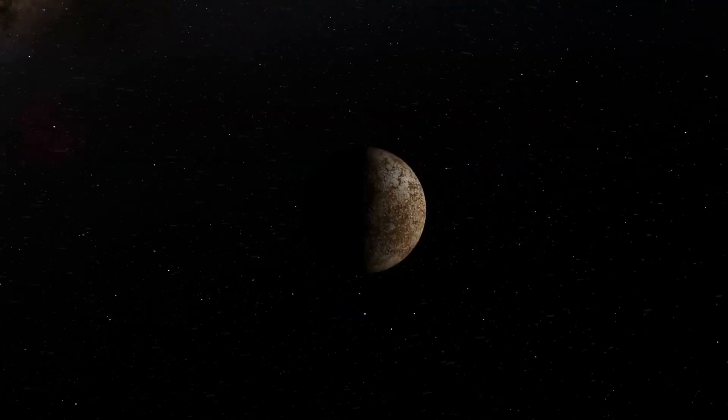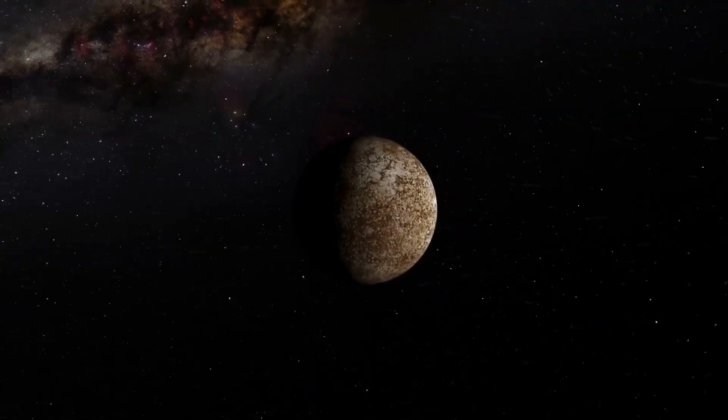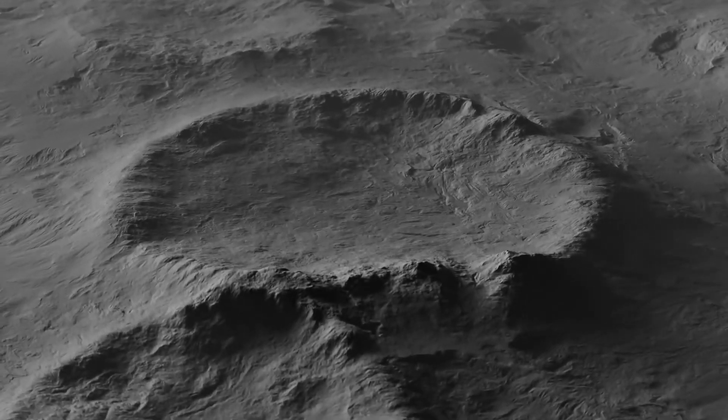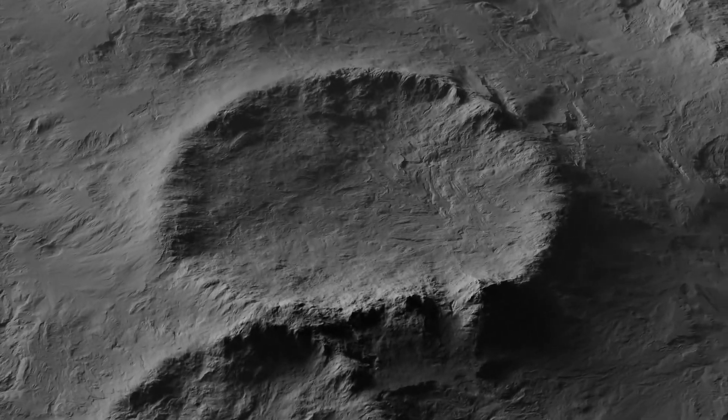What sets Mercury's surface apart? It's not just the craters and ridges. Its surface shows signs of extreme weathering, reflecting the planet's turbulent history.